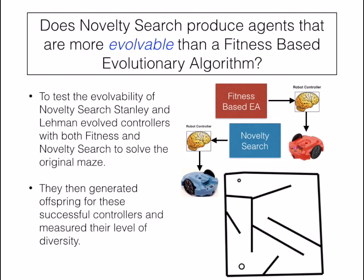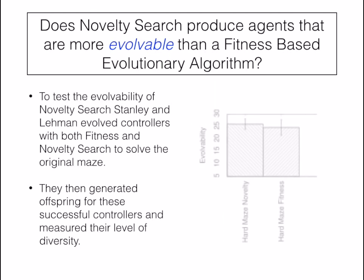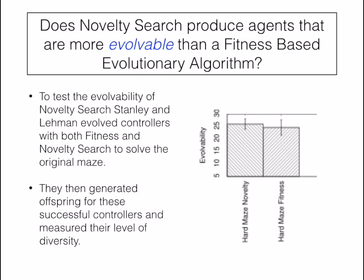To test the evolvability of NoveltySearch, Stanley and Lehman evolved controllers using both fitness-based and NoveltySearch approaches to solve the original maze, then generated offspring for these successful controllers and measured their level of diversity — this led to their evolvability score. If you look at the graph on the right, you can see that the NoveltySearch agents have a higher evolvability than the fitness-based agents.